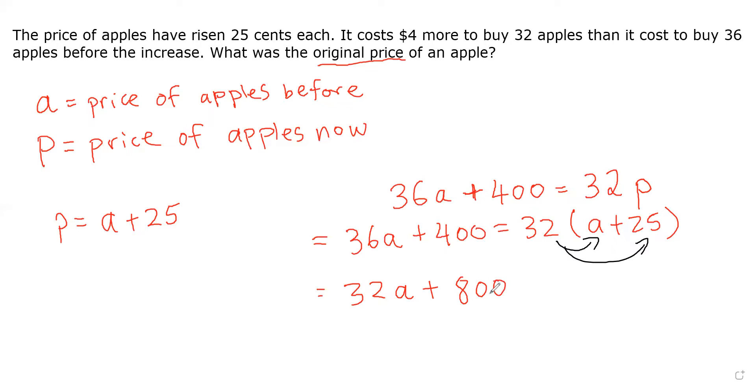So 32A plus 800 is going to equal to 36A plus 400. So here we should combine the like terms. We can take away 32A on both sides, and then we can also take away 400 on both sides. 36A minus 32A is 4A, and 800 minus 400 is just 400.